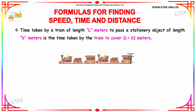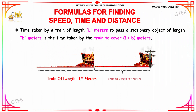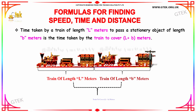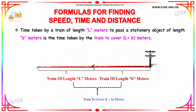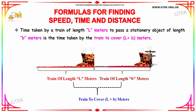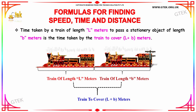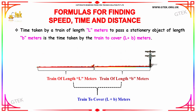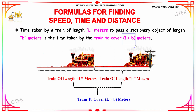The time taken by a train of length l meters to pass a stationary object of length b meters is the time taken by the train to cover l plus b meters. We need to add the length of the train and the length of the object.